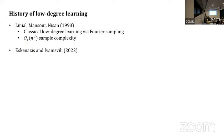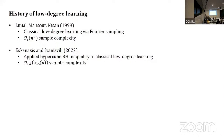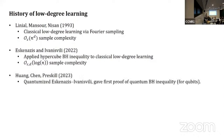Eskenazis and Ivanisvili in 2022 noticed that this hypercube BH inequality could actually be used to get this massive improvement such as log n sample complexity. Then Huang, Chen, and Preskill last year were able to quantumize this argument and gave a first proof of this non-commutative quantum BH inequality.